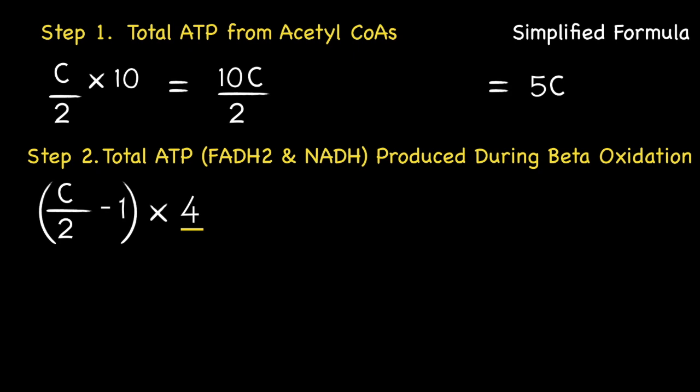So that explains where the number 4 comes from. We can now simplify this whole expression by multiplying C over 2 and the negative 1 within the brackets by 4. Multiplying C over 2 by 4 gives 4C over 2. While 4 times negative 1 gives negative 4. We can further simplify 4C over 2 to give 2C. So, in summary, this results in the expression 2C minus 4.